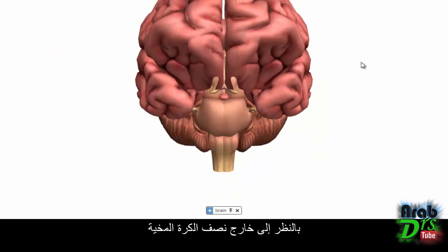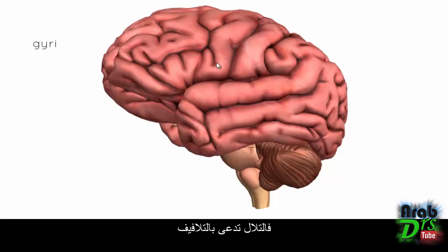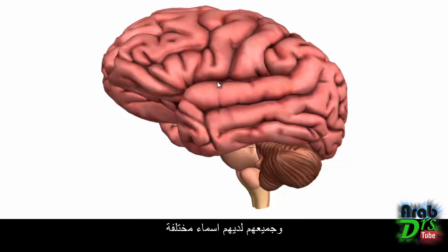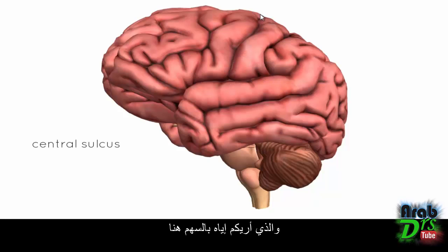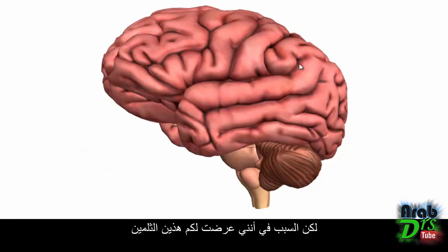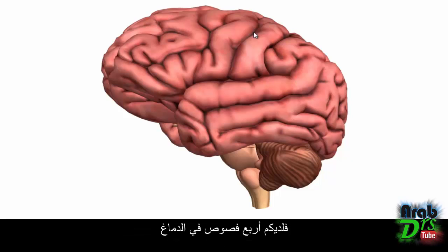Looking at the outside of the cerebral hemisphere, you can see grooves and ridges. The ridges are called gyri and the grooves are called sulci. Two important ones to remember are the central sulcus and the lateral sulcus. These two sulci are used to separate some functionally important lobes of the brain — there are four lobes of the brain, separated by various grooves.